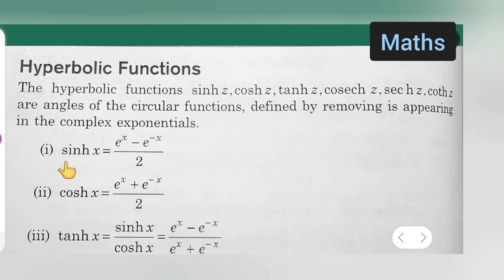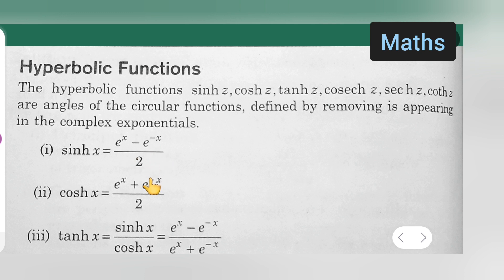The first one is sine hyperbolic x, which is equal to e raised to the power of x minus e raised to the power of minus x, upon 2. The second one is cos hyperbolic x, which is equal to e raised to the power of x plus e raised to the power of minus x, upon 2.